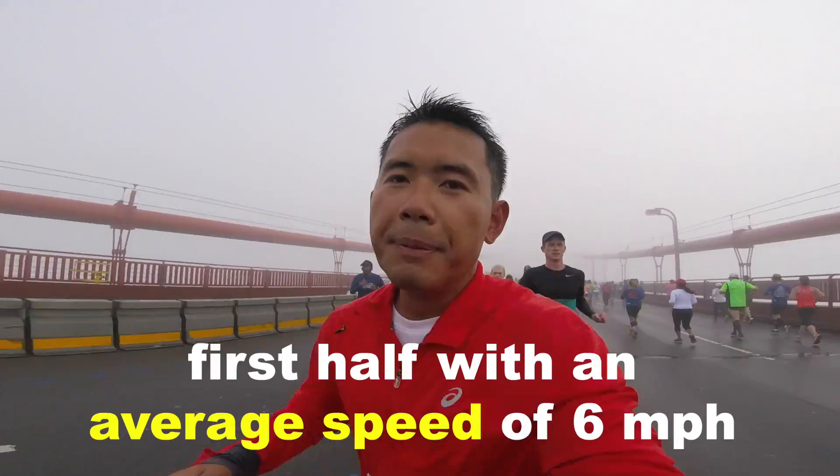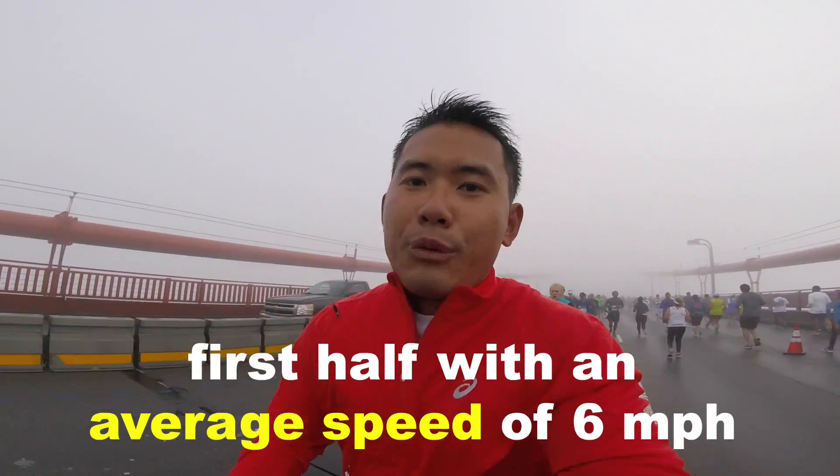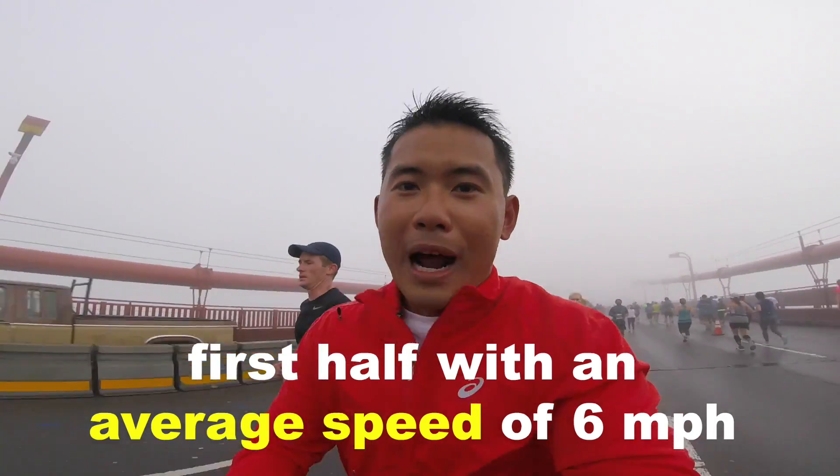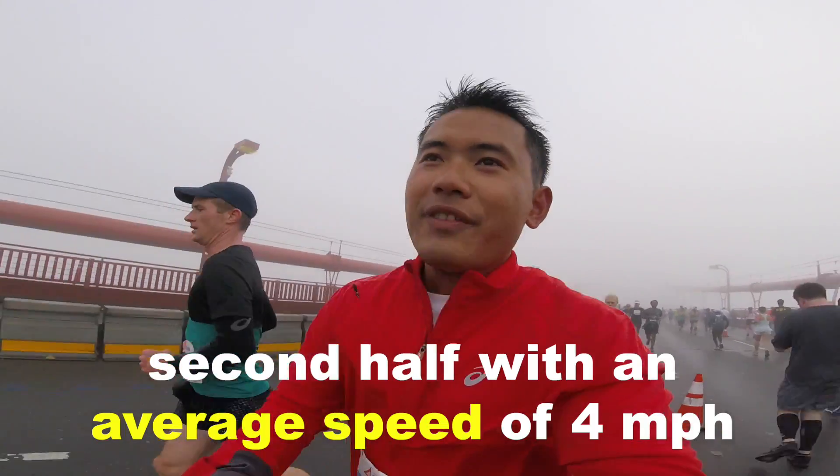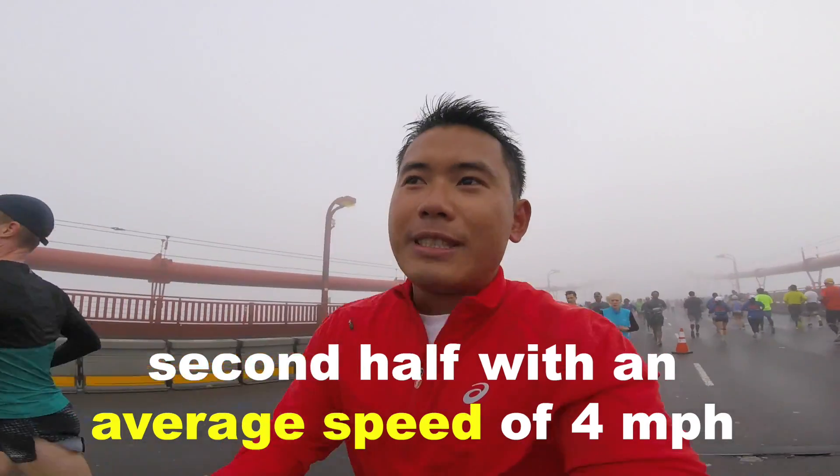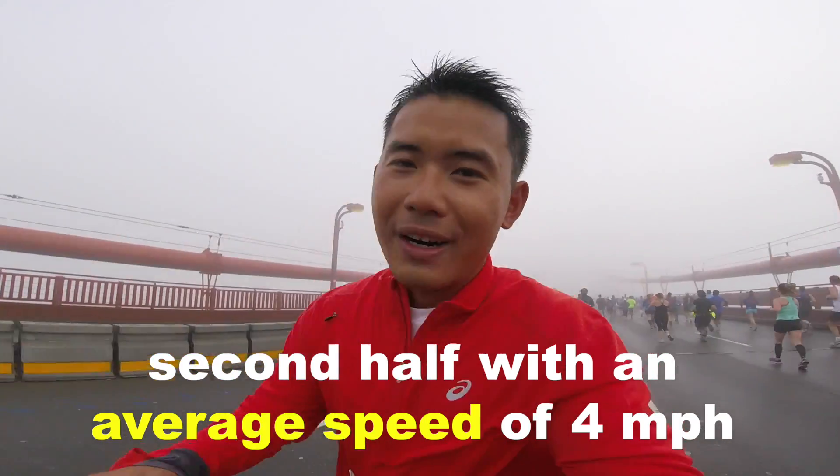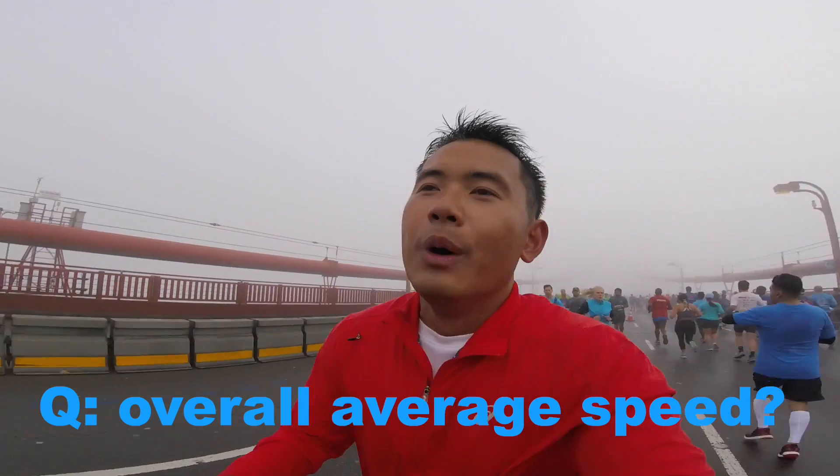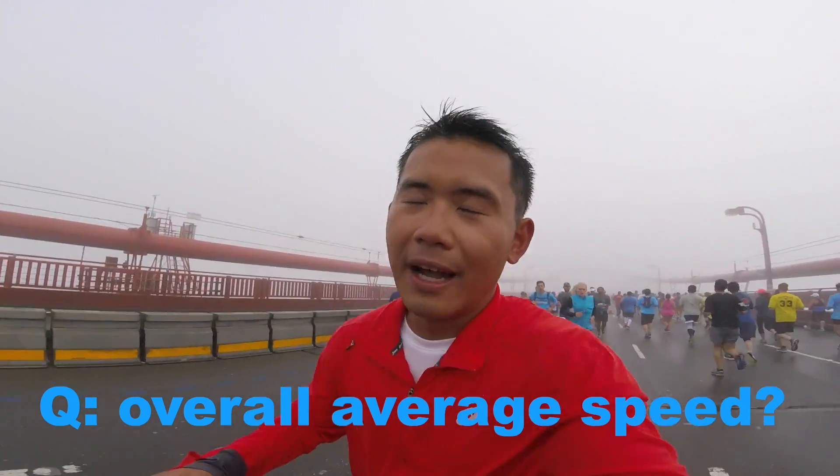Alright, I might as well tell you guys the other math question for fun, right? Suppose in the first half of the marathon, I run with an average speed of 6 miles per hour. And then the second half of the marathon, I run with an average speed of 4 miles per hour. And the question is, what is the overall average speed for the entire course? Go ahead and do it.